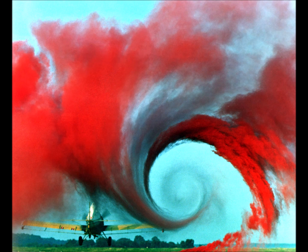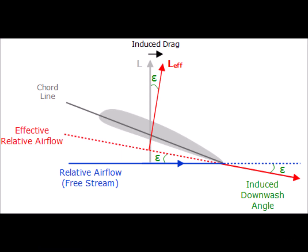Wingtip vortices are circular patterns of rotating air left behind a wing as it generates lift. Wingtip vortices are associated with induced drag, the imparting of downwash, and form the primary component of wake turbulence.